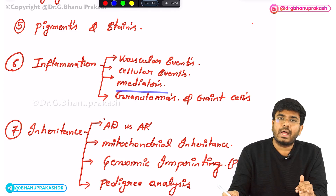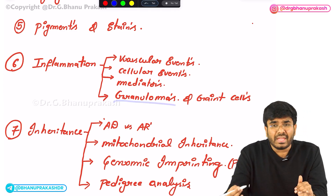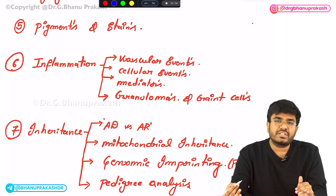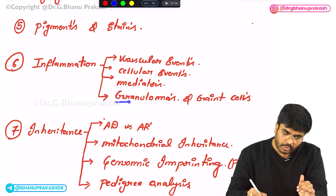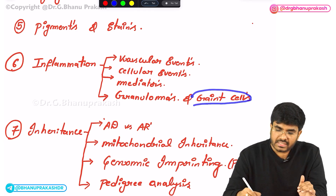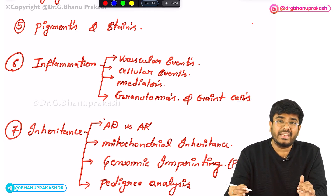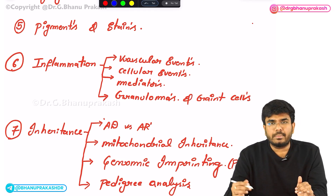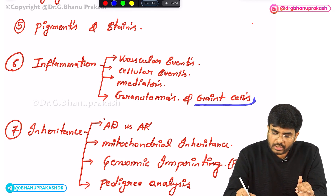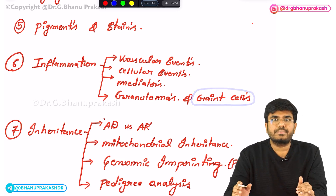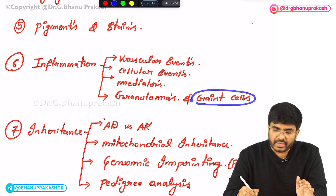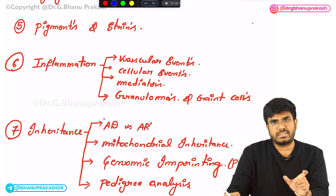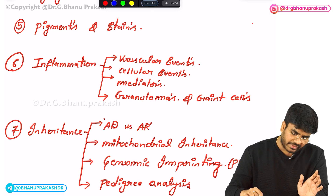Inflammatory mediators are important — you have to know the different inflammatory mediators and how they mediate the process of inflammation. Chronic inflammation causes granuloma formation, so you have to know about granulomas and giant cells. They will ask about different giant cells: stellate giant cells, Warthin-Finkeldey giant cells seen in measles, Touton giant cells. The giant cells topic is very important — they will directly ask which giant cell is seen in which disease.